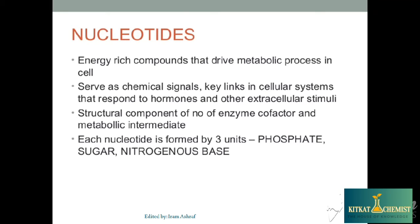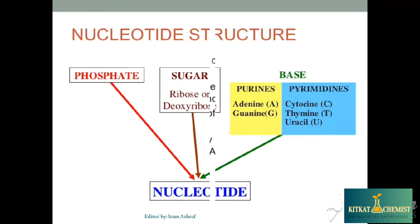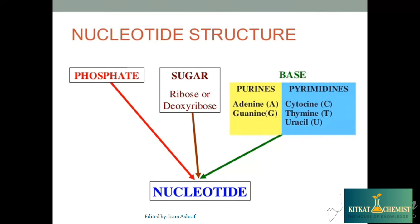This is very important: a nucleotide is composed of phosphate, sugar, and nitrogenous base. The sugar can be Ribose or Deoxyribose. The nitrogenous bases are Purines and Pyrimidines. Purines include Adenine and Guanine. Pyrimidines include Cytosine, Thymine, and Uracil.